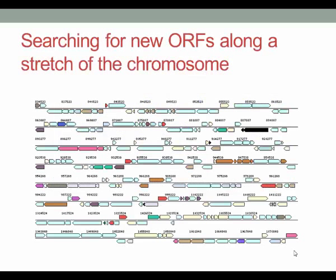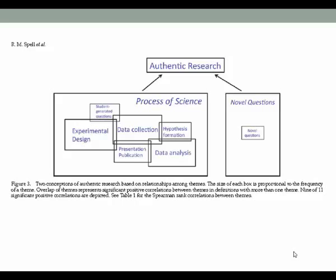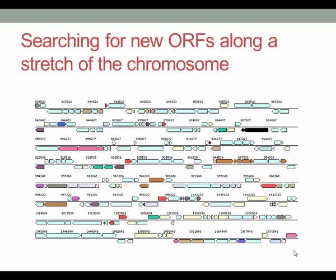There are many approaches one can take in gene annotation. One approach is looking for open reading frames along a stretch of the chromosome. This is an image from the Joint Genome Institute's database called IMG, which predicts the position and functions of genes along a stretch of chromosome. Each band represents a particular open reading frame, with the arrow pointing in the direction of transcription. It is common to find new ORFs missed in the original annotation — searching with NCBI's ORF Finder followed by further annotation can result in the discovery of new genes not previously annotated.